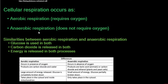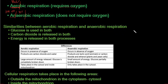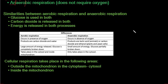Cellular respiration occurs as aerobic and anaerobic respiration. Aerobic — from 'aero' meaning air — requires oxygen. Anaerobic — 'an' meaning no, 'aero' meaning air — does not require oxygen. Both processes use glucose, both produce carbon dioxide, and both release energy, just at different amounts.